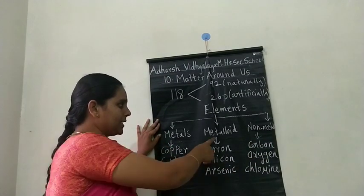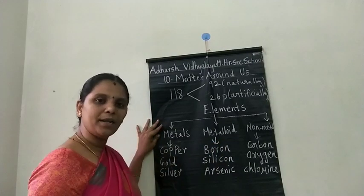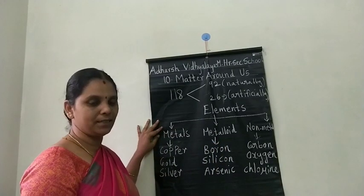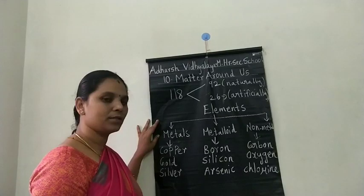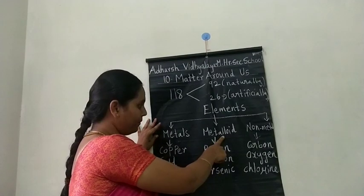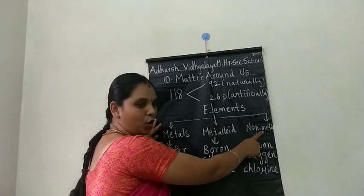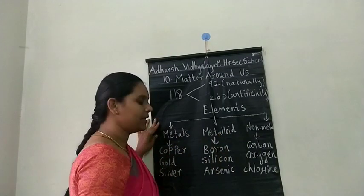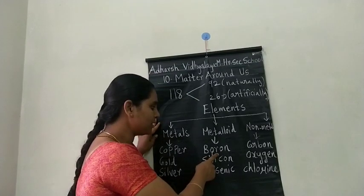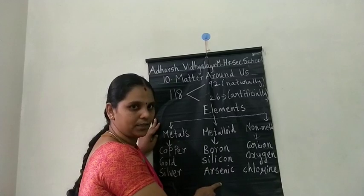The next category is metalloids. The other name for metalloids is semi-metals, because metalloids have the properties of both metals and non-metals. Examples of metalloids are boron, silicon, and arsenic.